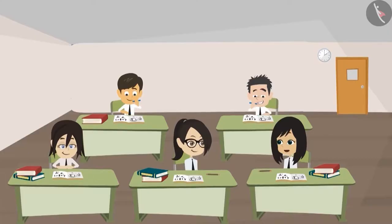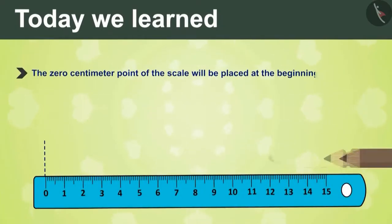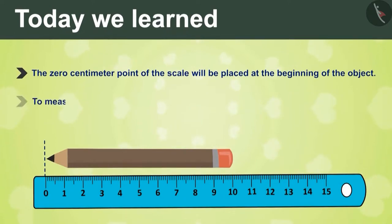We need to remember these two rules while measuring any object. The 0 centimeter point of the scale will be placed at the beginning of the object. And to measure an object, we will start from 0 marking on the scale.